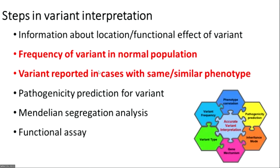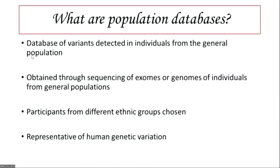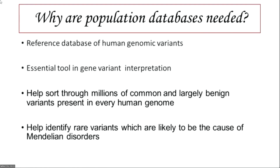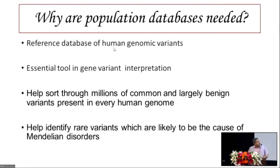Today I will talk mainly about two of these evidences — population databases and known mutation databases — which form a large amount of evidence when interpreting variants. Population databases are databases of variants detected in individuals from the general population, obtained through sequencing of exomes or genomes of normal individuals. Participants need to be from different ethnic groups because patients come from different ethnic groups, making them truly representative of human genetic variation. A reference database of human genomic variants helps identify what is different and likely to be disease-causing, helping us sort through millions of common and largely benign variants to identify the rare variants that could be disease-causing.